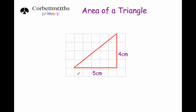So here we've got a right angle triangle with a base of five centimetres and a height of four centimetres. What we're going to do is find the area of this triangle by turning it into a rectangle. By going up and across you can see the triangle is half of the whole rectangle — if we join up the opposite corners we've got that triangle, so the triangle is half of the rectangle.